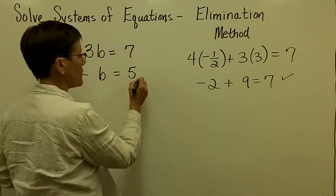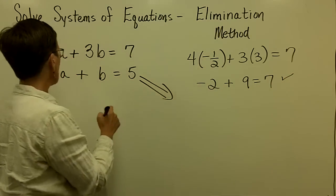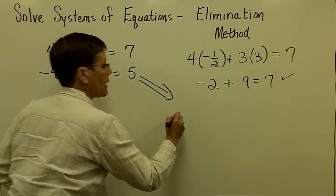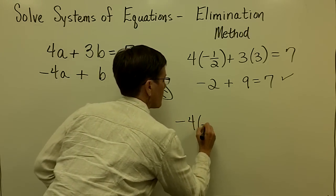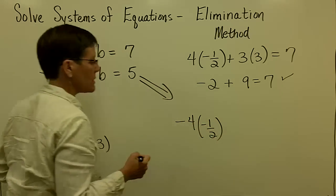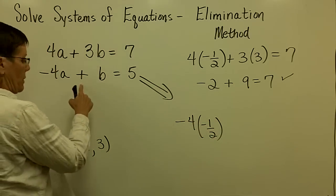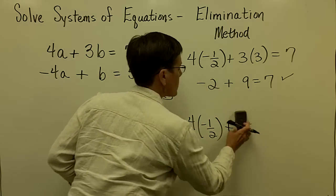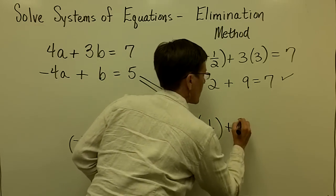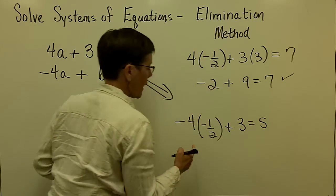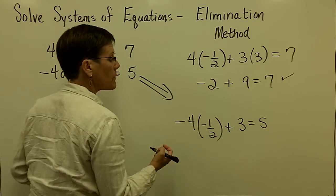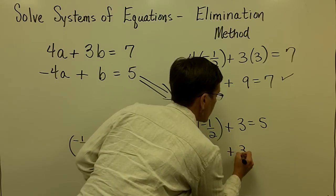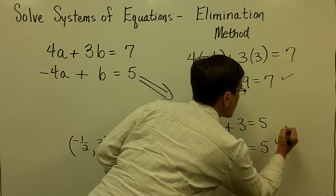When I take my second equation, it's negative 4 times a, which is negative 1 half. That's going to be a positive 2 plus b, which is 3. And I want to know if that's equal to 5. So again, this negative times a negative is a positive. And 4 over 2 is 2. And I want you to ask yourself if 2 plus 3 does indeed equal 5.